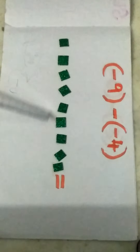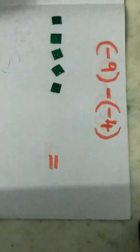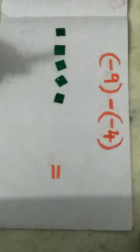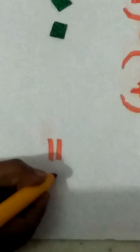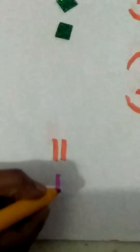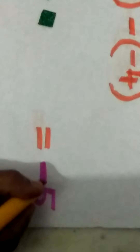Can you do it? From negative 9, take away negative 4: 1, 2, 3, 4. So take away negative 4. What remains? 5 green counters. Green represents negative. So negative 5 is the answer — negative 5 is the solution.